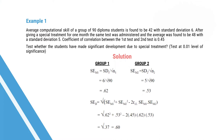Analyzing the question, we find two groups. SEM₁ = SD₁ / √N₁ = 6 / √90 = 0.62. Similarly, SEM₂ = SD₂ / √N₂ = 5 / √90 = 0.53. Putting the values in the formula — standard error of difference = √(SEM₁² + SEM₂² − 2·R₁₂·SEM₁·SEM₂) — and simplifying, we find the standard error of difference is 0.60.